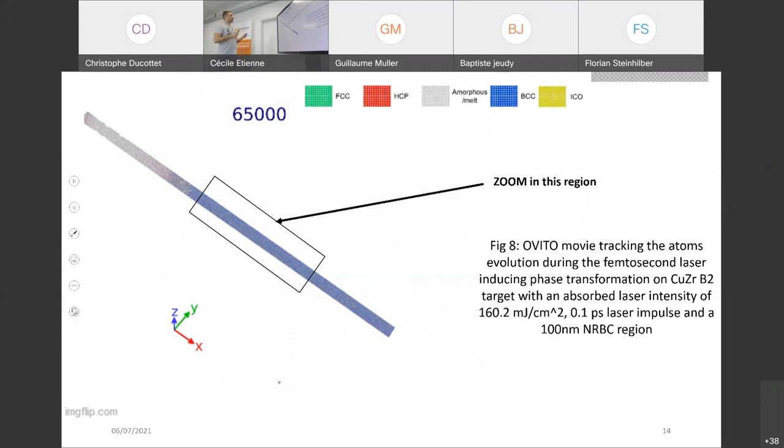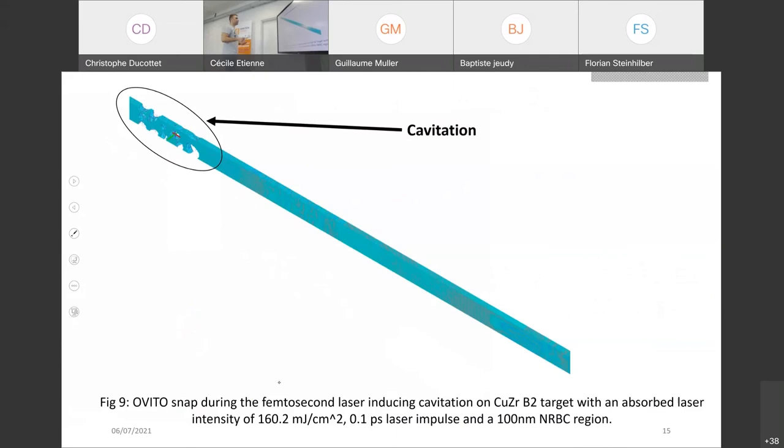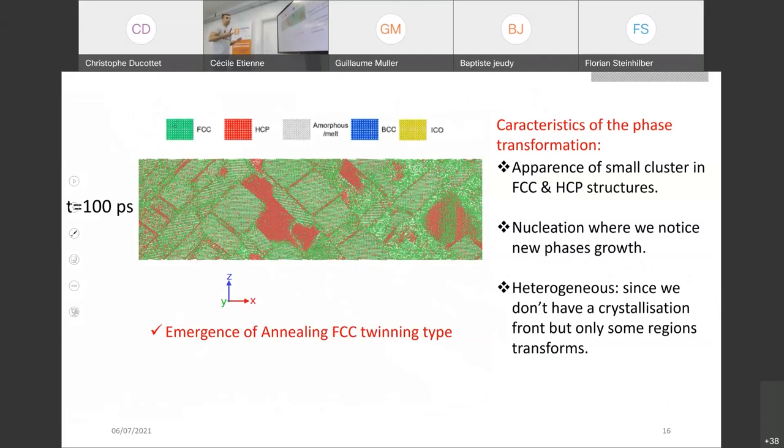The second exercise that we did is we double now the fluence, and we double also the size of our system, and see what's happening. The first thing that we can see is the formation of cavitation on the surface when we double the fluence. And not only because we have the emergence of a new phase which will be dominant in this case, and it's the FCC. Just to resume, we just changed laser conditions, and FCC becomes more dominant than the HCP.